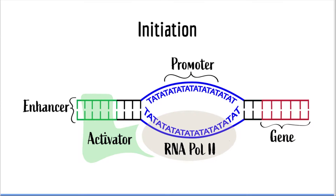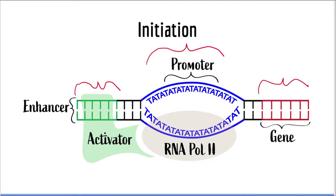A gene typically has three important elements: it will have regulatory sequences, it will have a promoter sequence, and finally it will have the coding section, or the gene. It's important to know that there can be various regulatory sequences, and they can be in many different locations in the genome. For example, you can have a regulatory sequence before the promoter, in between the promoter and the gene, or after the gene. You can even have multiple regulatory sequences, one after the other.